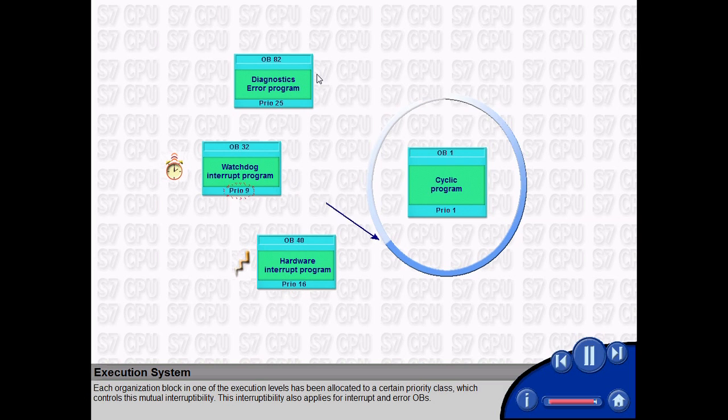Each organization block in one of the execution levels has been allocated to a certain priority class, which controls this mutual interruptibility. This interruptibility also applies for interrupt and error OBs.